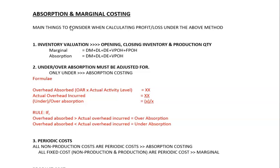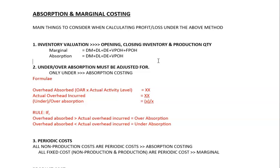Under marginal costing, to value your inventory you take: direct material (DM) cost per unit, plus direct labor cost per unit, plus direct expenses per unit, plus variable production overhead (VPOH) per unit. Fixed production overhead is not included in the marginal costing inventory valuation.